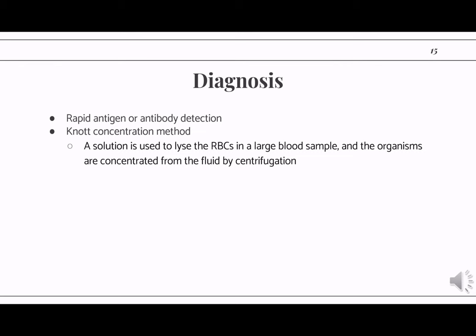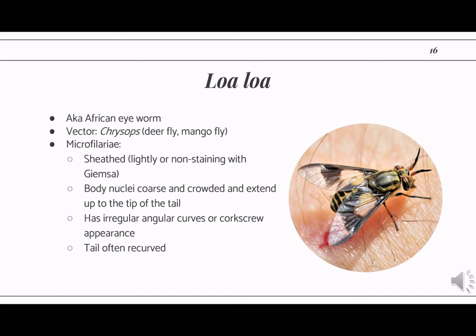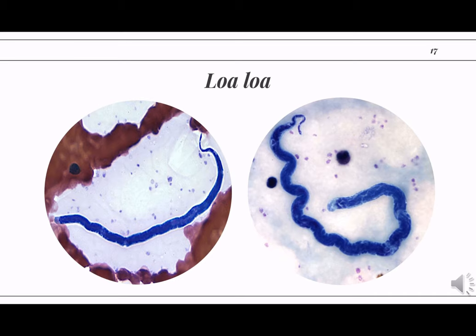Next we have Loa loa, also known as the African eye worm. For this parasite, their vectors are flies from the genus Chrysops — common names are deer fly and mango fly. The microfilariae of Loa loa are also sheathed, just like the lymphatic filarial worms, and the body nuclei are coarse and crowded and extend up to the tip of the tail. They have irregular angular curves or often a corkscrew appearance, and the tail is often recurved — if you look at the tail end of Loa loa, it will seem like a hook. The body nuclei are coarse and crowded, giving a somewhat blurred or inconspicuous appearance similar to Brugia, and the worm also has coarse curves along its body.